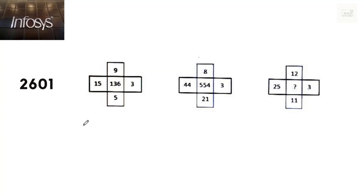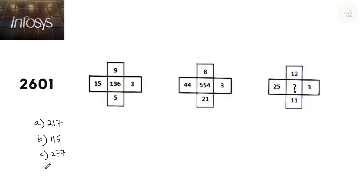Okay, I'll give you ample time to solve this. Let's have the options — what number should be placed in the question mark position? The four options given are 217, 115, 277, and 145. Your one-minute timer starts now.